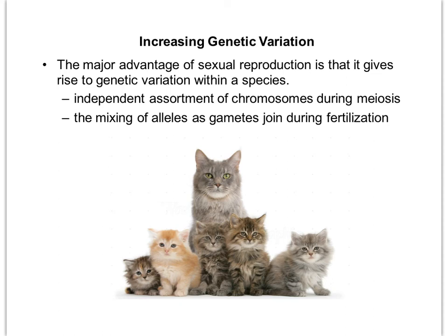Also during sexual reproduction is the mixing of alleles as gametes join during fertilization — a unique egg combining with a unique sperm to create a third unique organism. And crossing over during prophase one shuffles up the homologous chromosome pairs, ensuring that none of the eggs of a female and none of the sperm of a male are going to be identical.